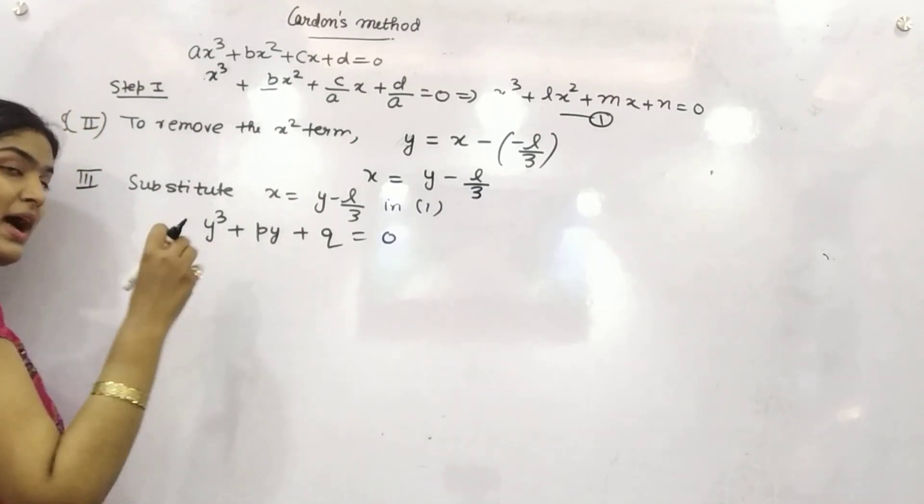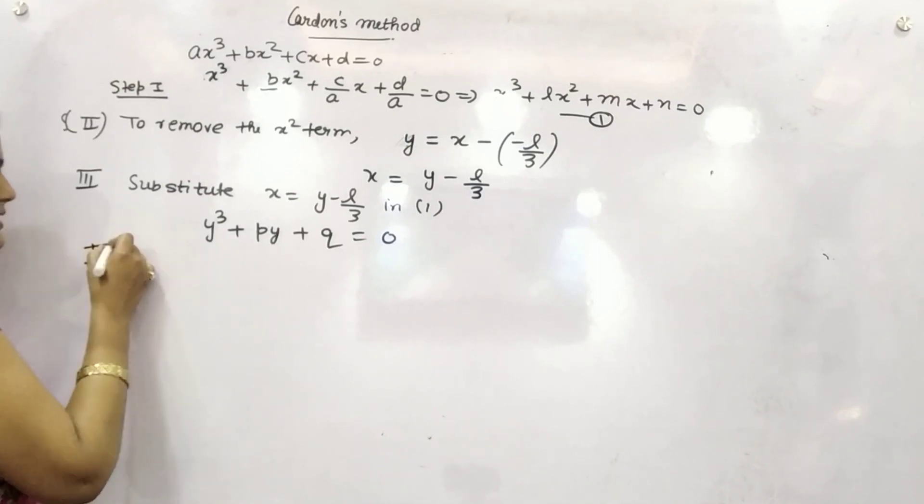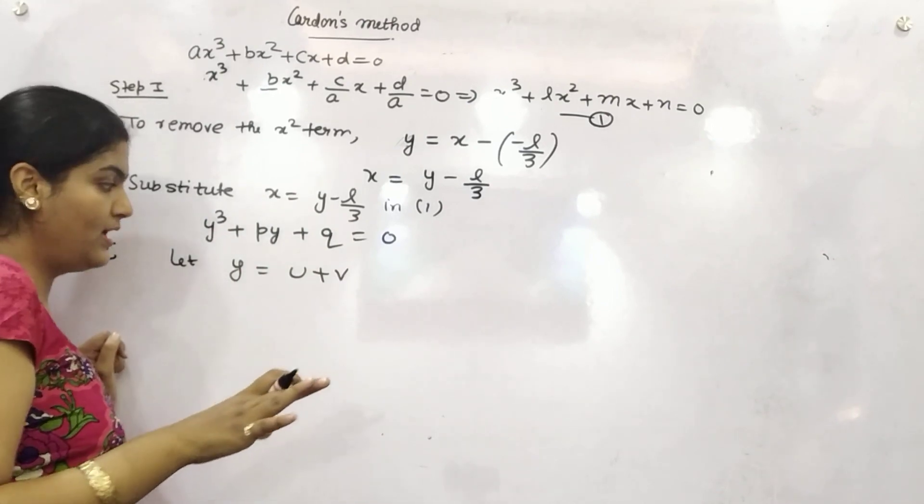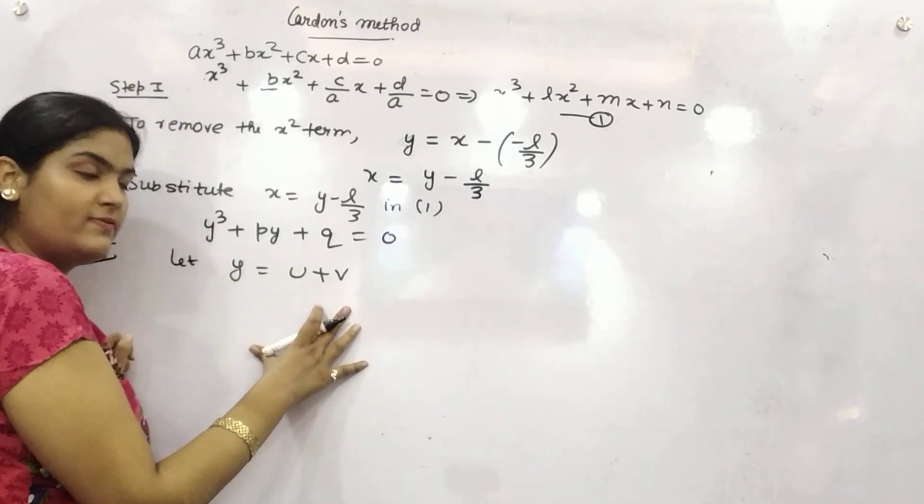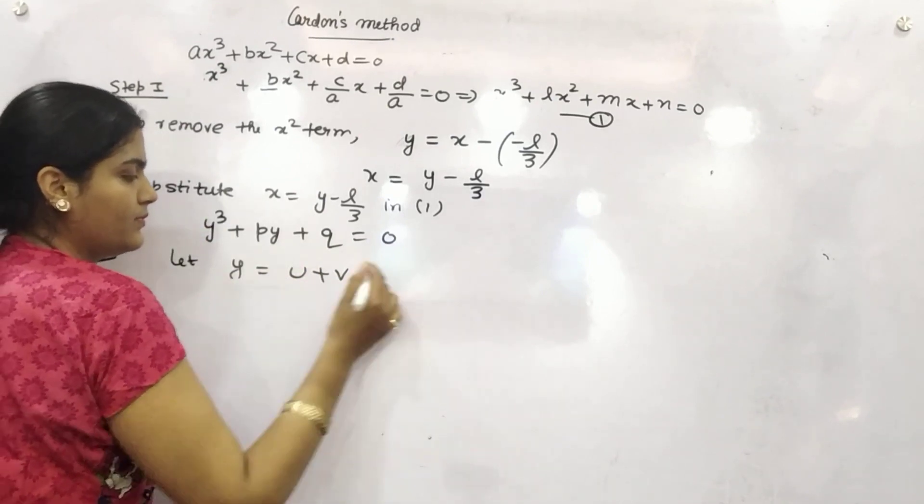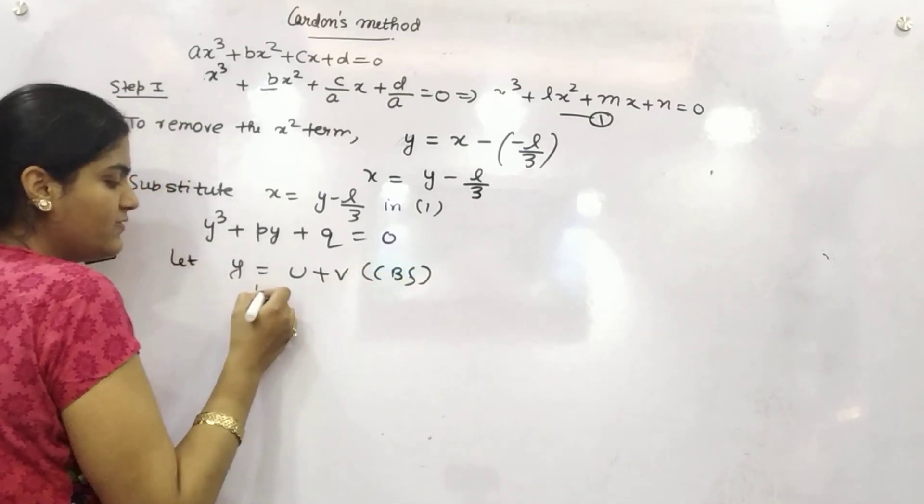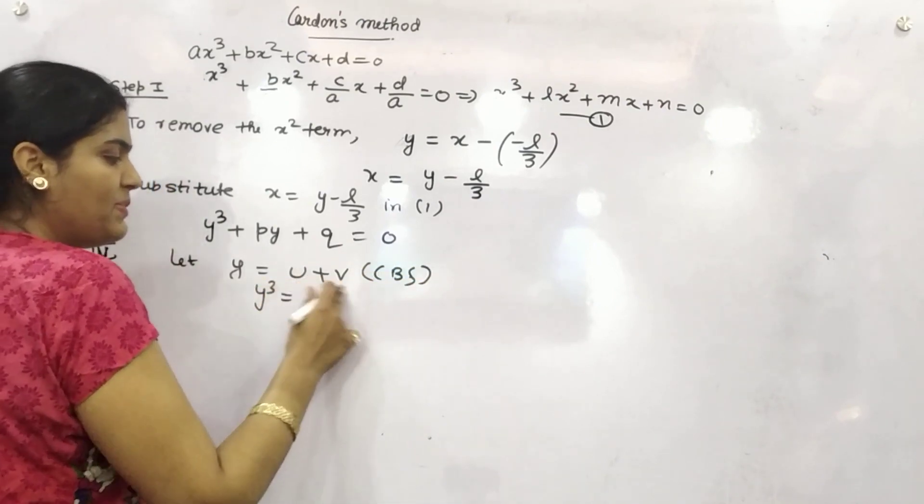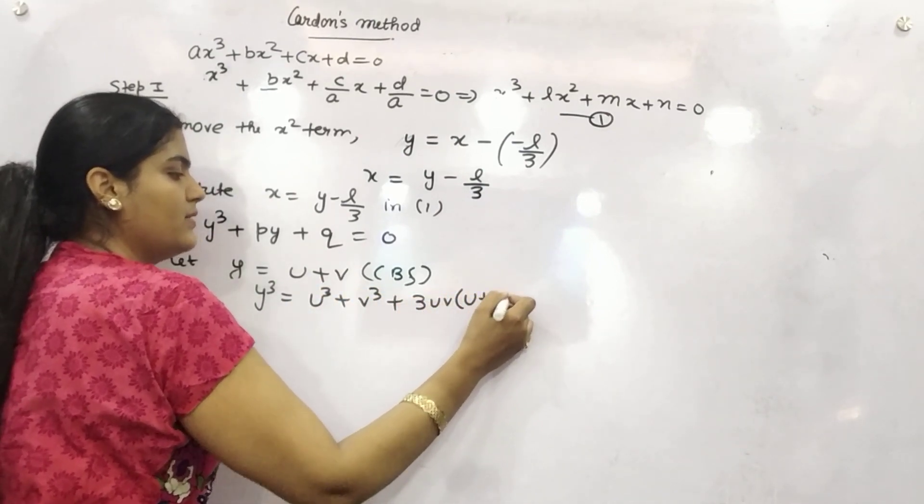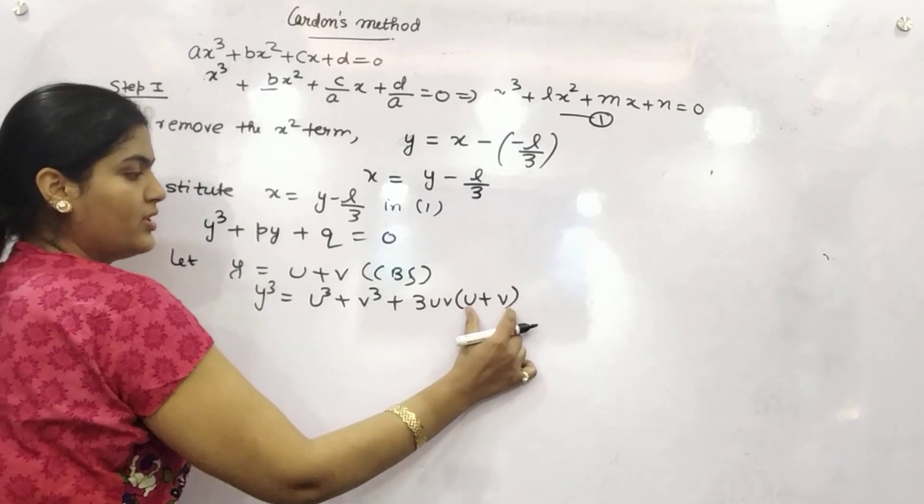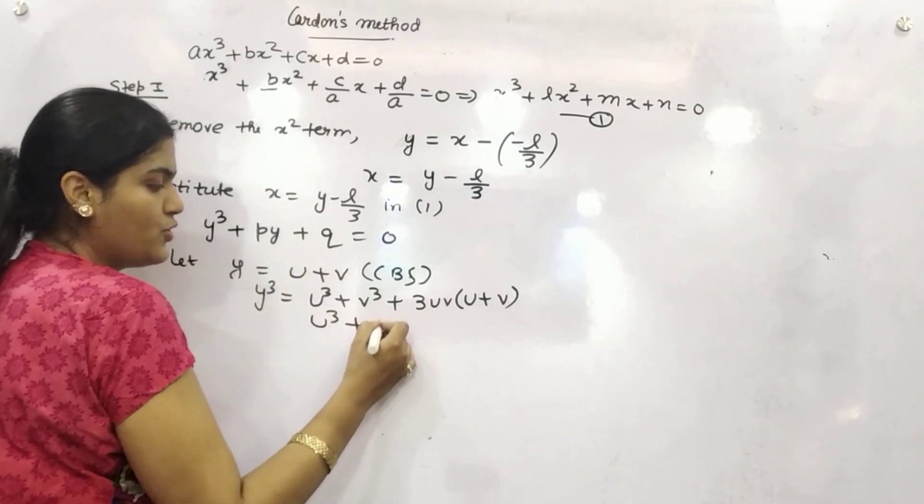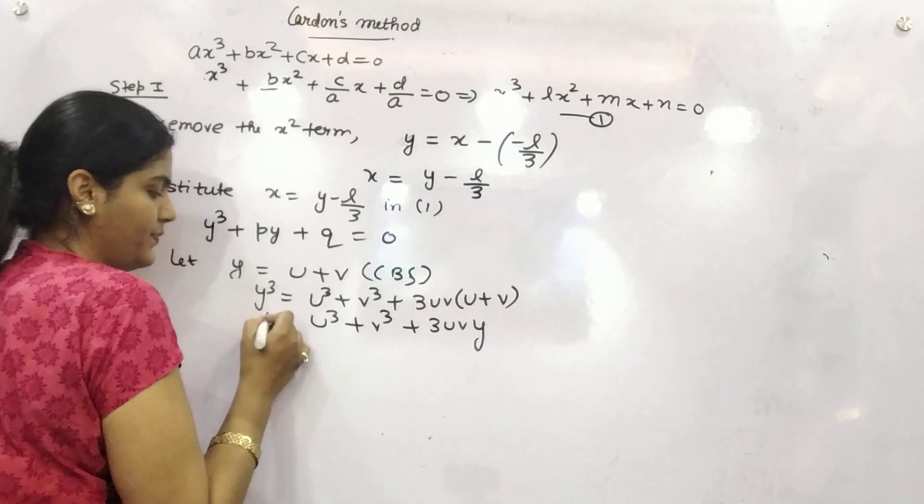Then after what you need to do, you have to consider, your fourth step is, let y is equal to u plus v. Y is equal to u plus v. Now, cubing both sides. On cubing both sides, this will be y cube and a plus b whole cube is a cube plus b cube plus 3ab, a plus b. And you can put this 3uv, u plus v as y. So this would be u cube plus v cube plus 3uvy.